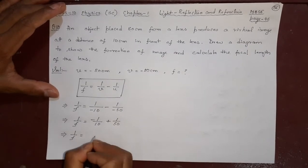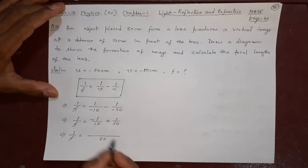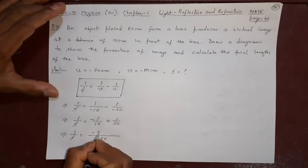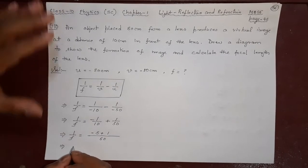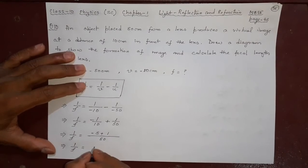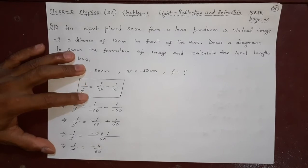1/f, minus times minus is plus 1/50. 1/f, the LCM will be 50 because both are divisible by 50. 10 fives are 50, ones are 1. So this will give you 1/f = -4/50.